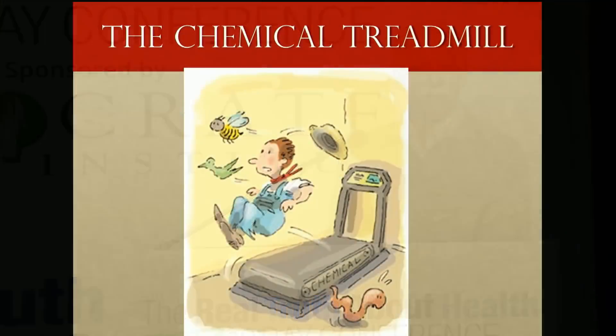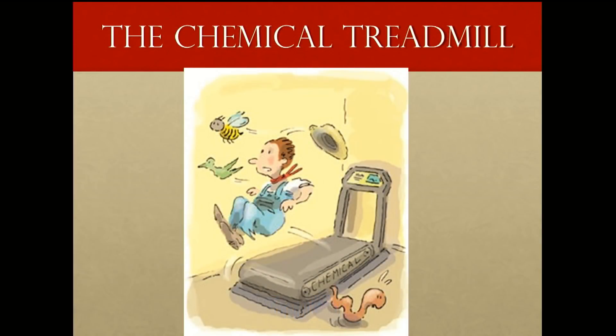As each technological tool fails, it must be replaced with another newer technological fix — and that one will fail also. This is the technological treadmill. Farmers are caught on this treadmill; for them it's called a chemical treadmill, a chemical solution treadmill.